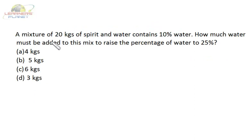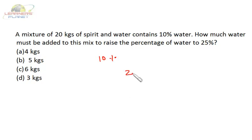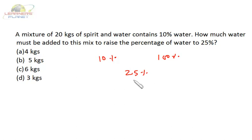In this question, a mixture of 20 kilograms of spirit and water contains 10% water. How much water must be added to this mix to raise the percentage of water to 25%? We are having 10% water, and we wish to have a mixture which contains 25% water. So we need to add pure water, whose water content is 100%.